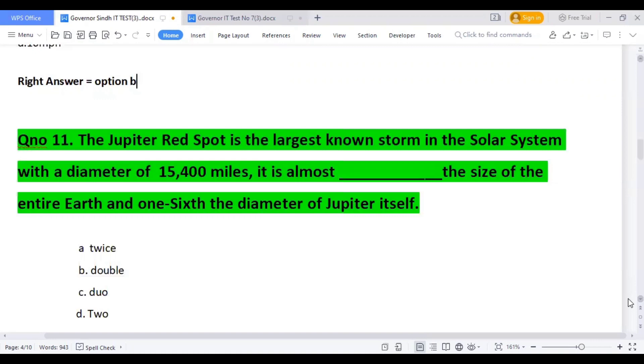Question number 11: The Jupiter Red Spot is the largest storm in the solar system with a diameter of 15,700 miles. It is almost twice the size and one-sixth the diameter of Jupiter itself. The right answer is option number 3.